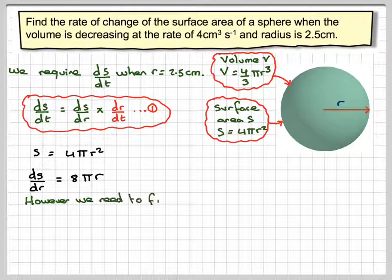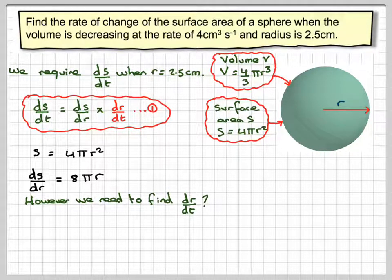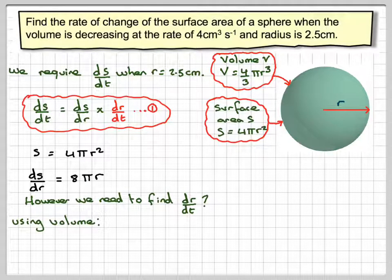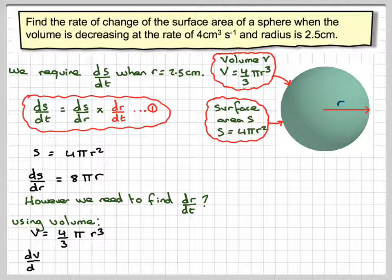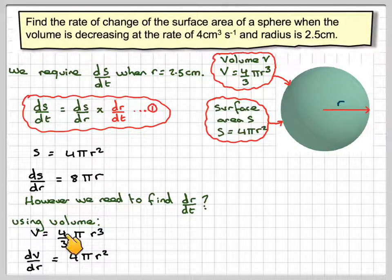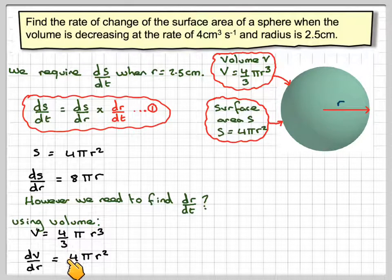We need to find dr/dt. How can we find dr/dt? Well, we have information about the volume, so let's look at that. The volume is 4/3 π r³. Let's differentiate that — so that gives dv/dr. The threes cancel out and we're left with 4π r².